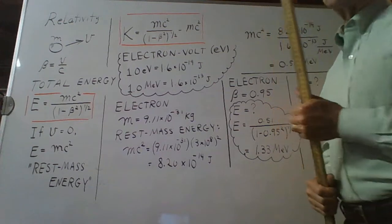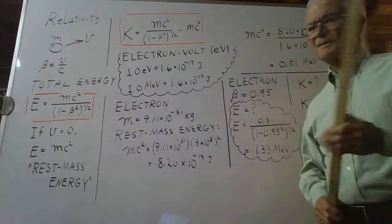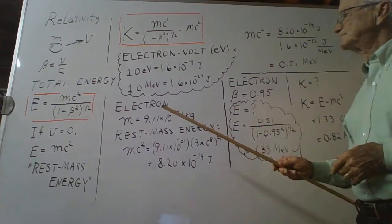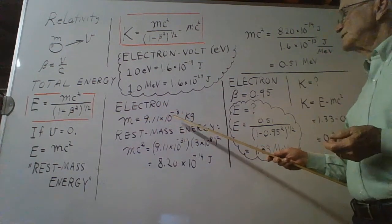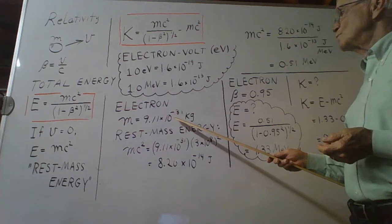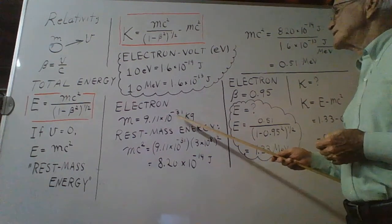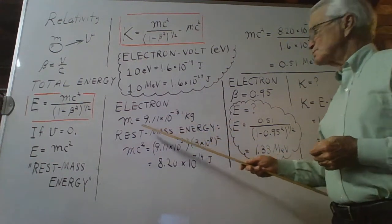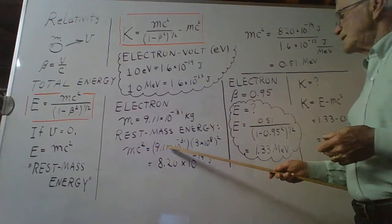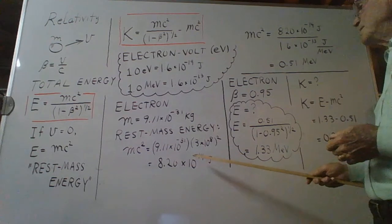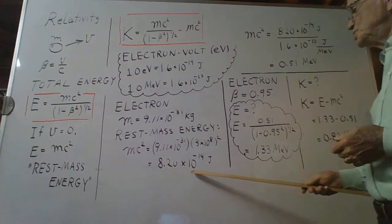Let's calculate the rest mass energy, mc squared, of an electron. The mass of the electron is shown here, 9.11 times 10 to the negative 31 kilograms. Its rest mass energy is mc squared, so you have m times the speed of light squared, and you get that many joules.